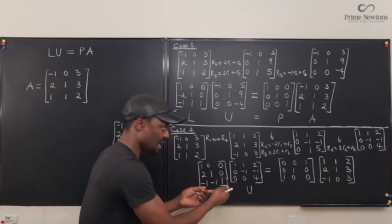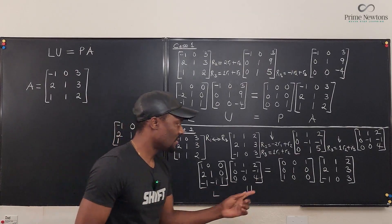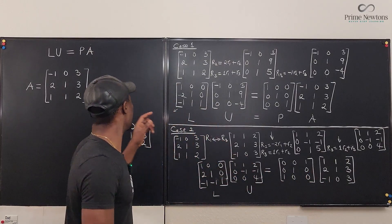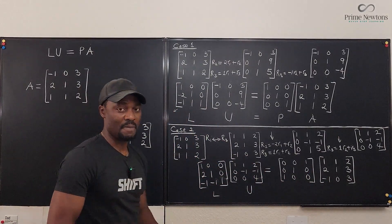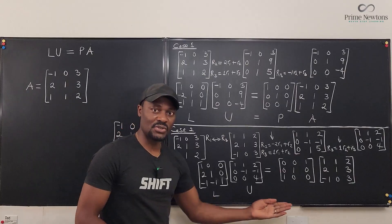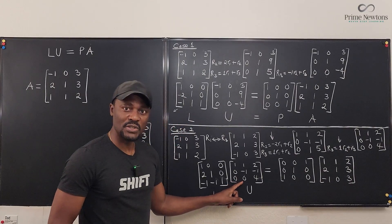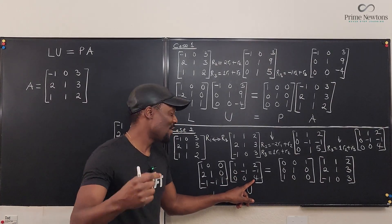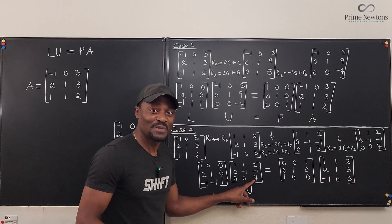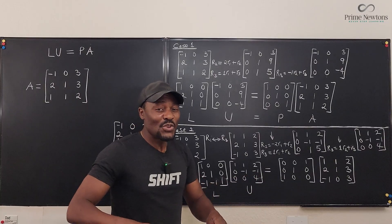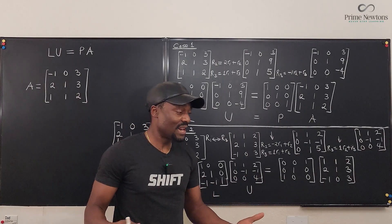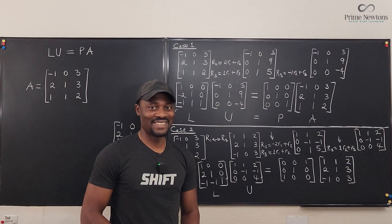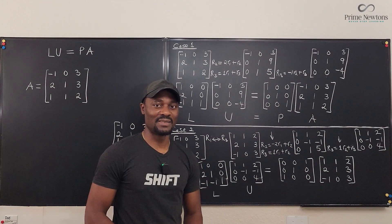If you multiply these two together, you'll get the same answer as multiplying P times A. This is decomposition. With U, you can solve a system of linear equations, find the rank of the matrix, find the nullity of the matrix, and find other things I'm going to talk about in other videos. Never stop learning — those who stopped learning have stopped living. Bye-bye.